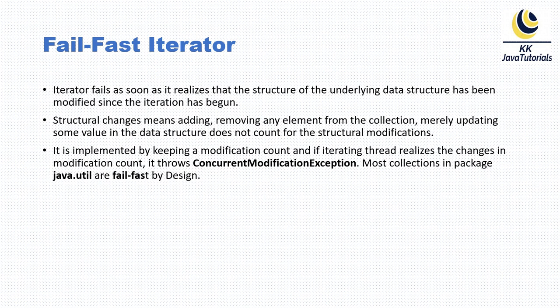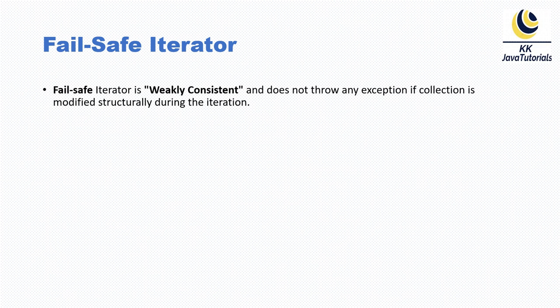If the iterating thread realizes a change in the modification count, it throws a ConcurrentModificationException. Most collections in the java.util package are fail-fast by design. Once you get the iterator from the underlying collection by calling the iterator method, the implementation stores the initial modification count. While iterating, it keeps checking if there is a change in that count, and if so, immediately throws a ConcurrentModificationException — that's how it is implemented internally.